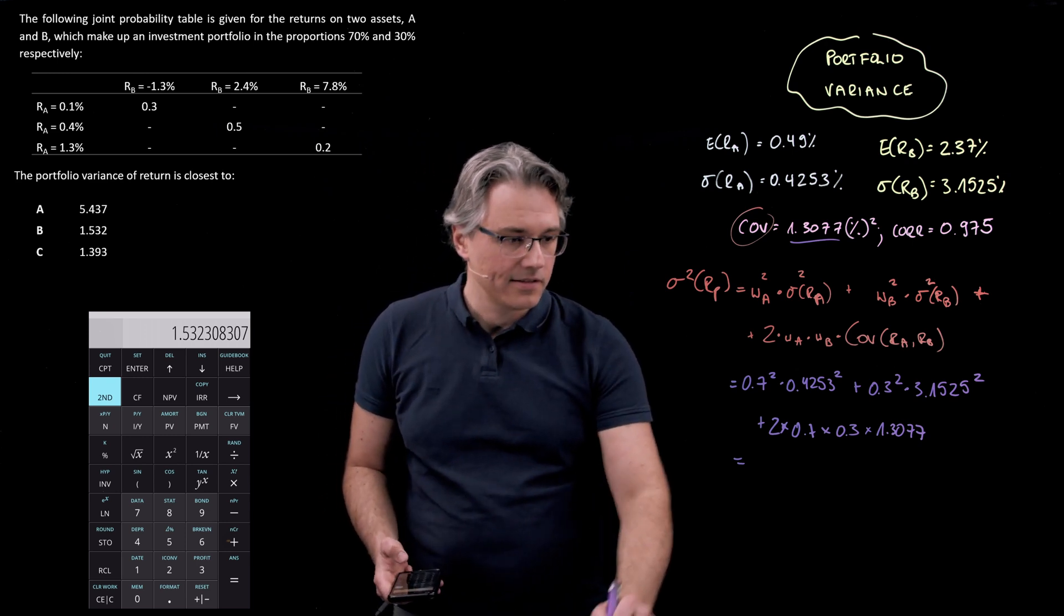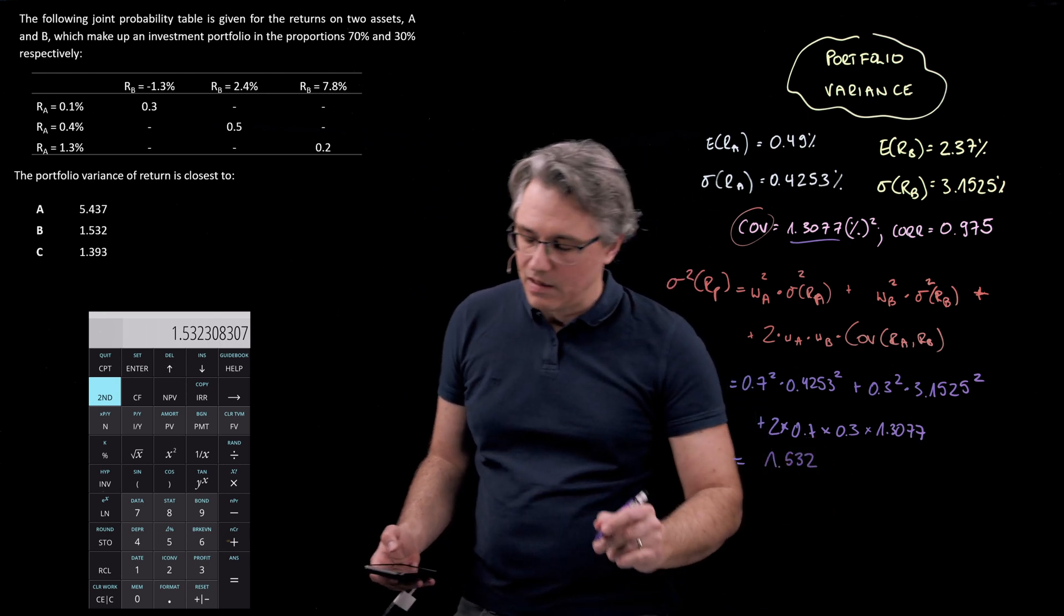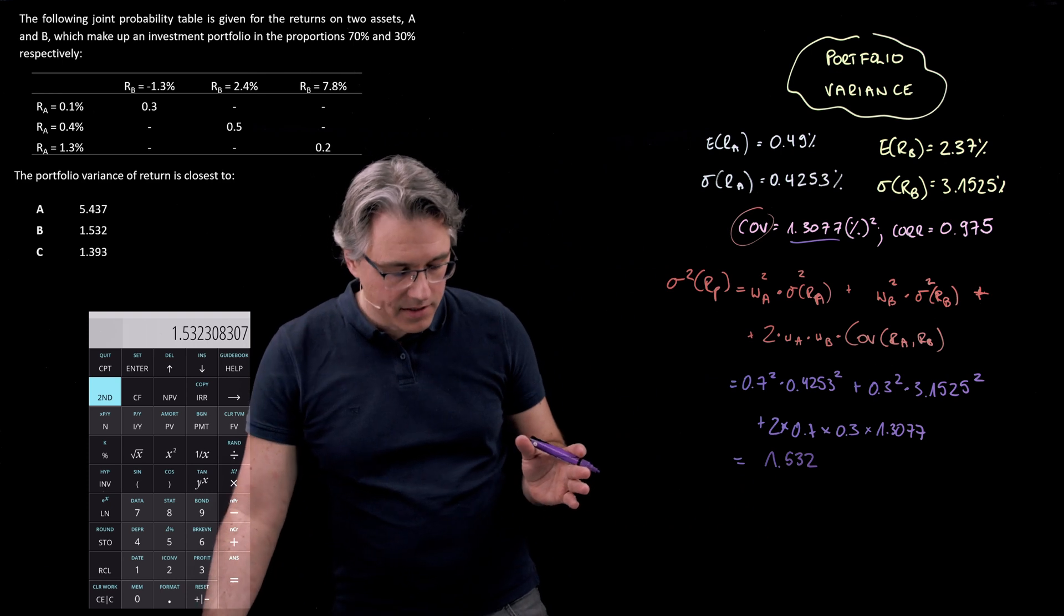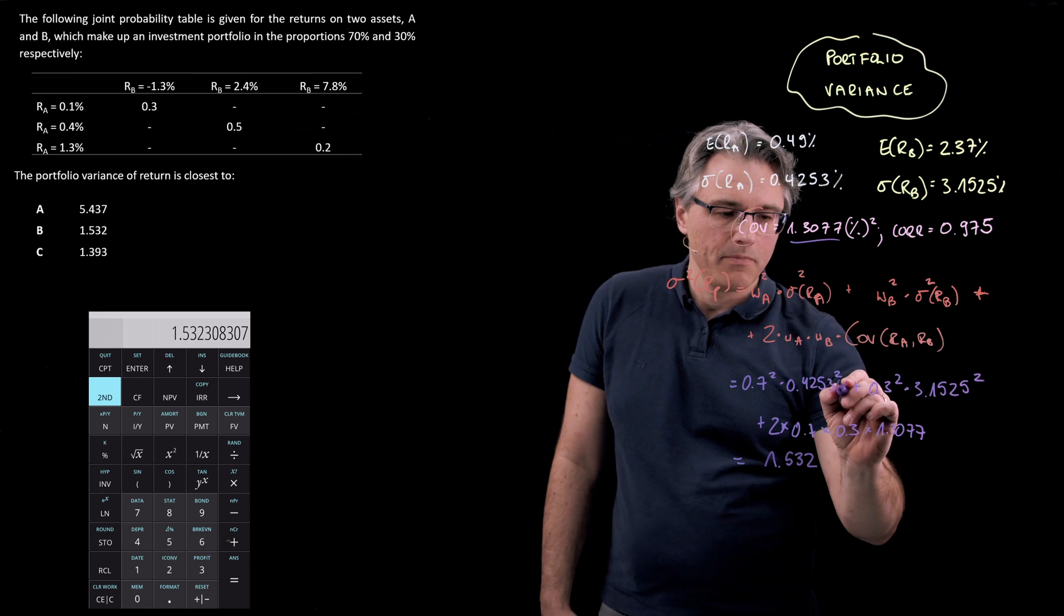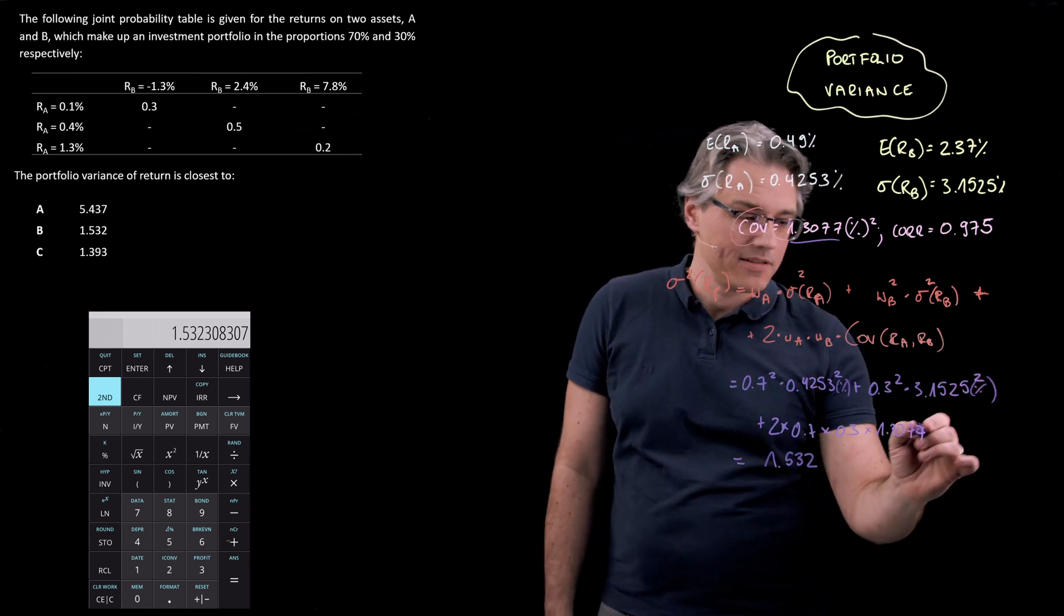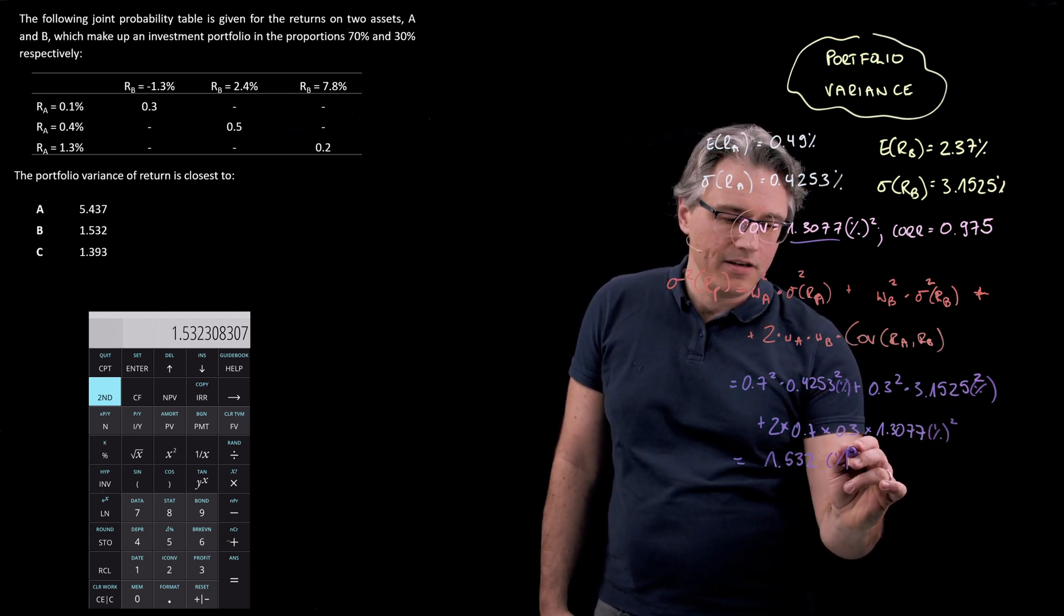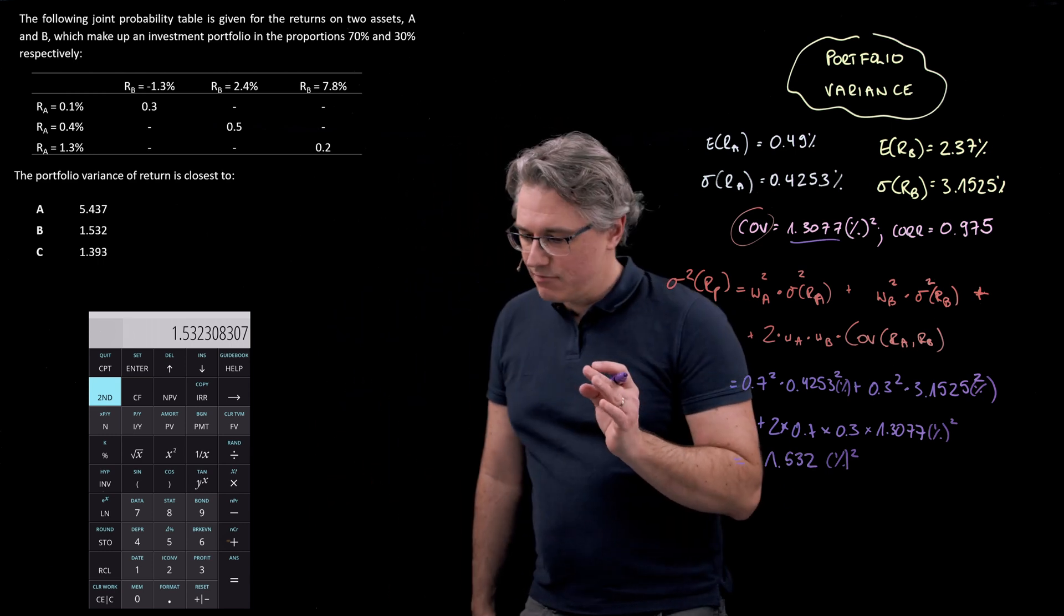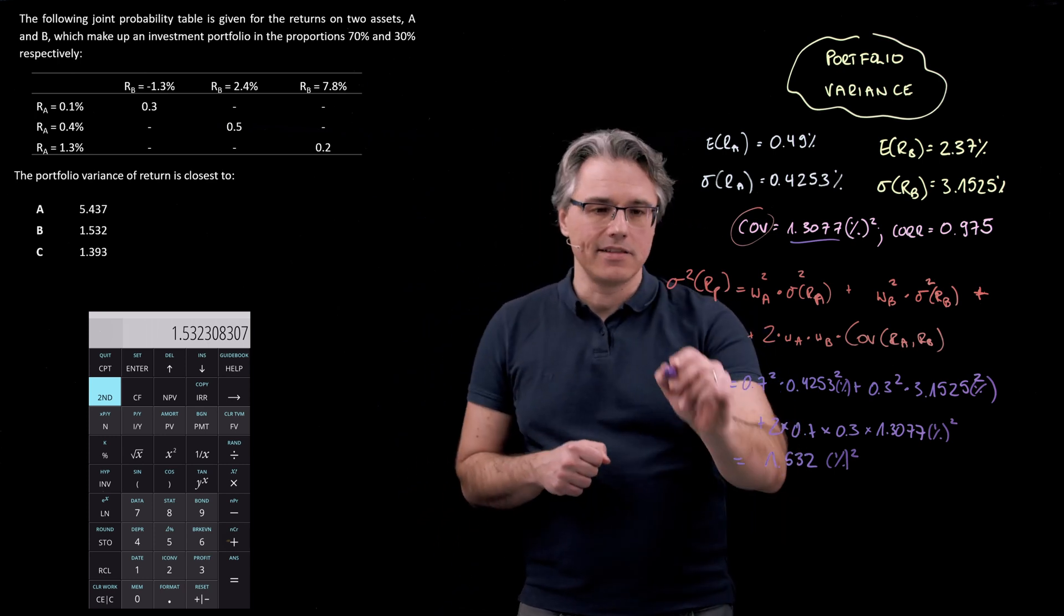Okay, and the result I'm looking at is 1.532. Now appreciate that consistently with how we express variance, this is also in percent squared, because this was a percent squared, this was a percent squared, and covariance is expressed in percent squared anyway. So this is also expressed in units squared. Nevertheless, we've got a result, and that result seems to correspond very nicely with our answer B.